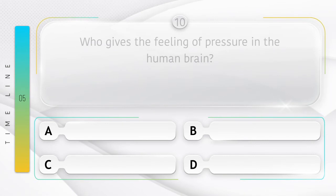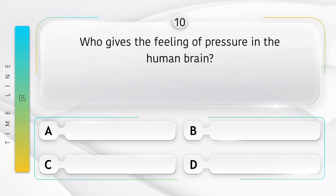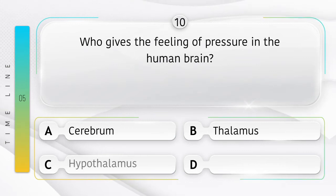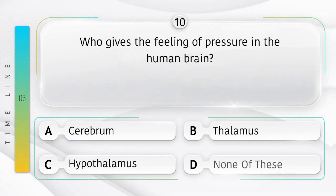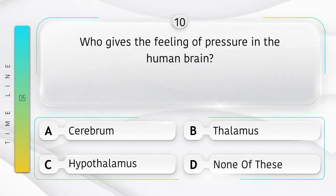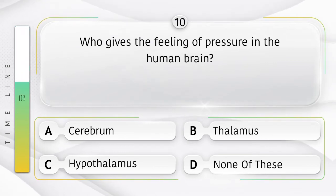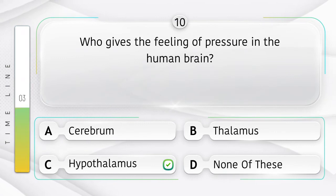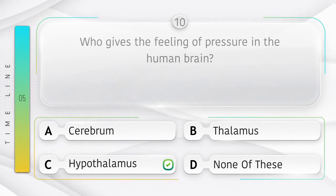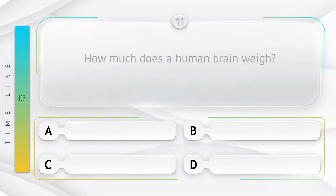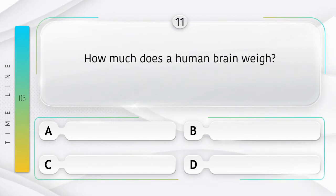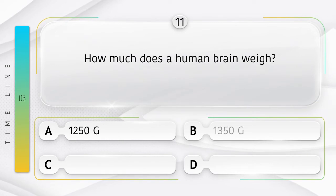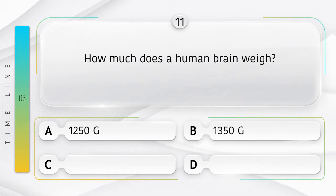Who gives the feeling of pressure in the human brain? Option A: cerebrum, B: thalamus, C: hypothalamus, D: none of these. Answer is option C: hypothalamus.